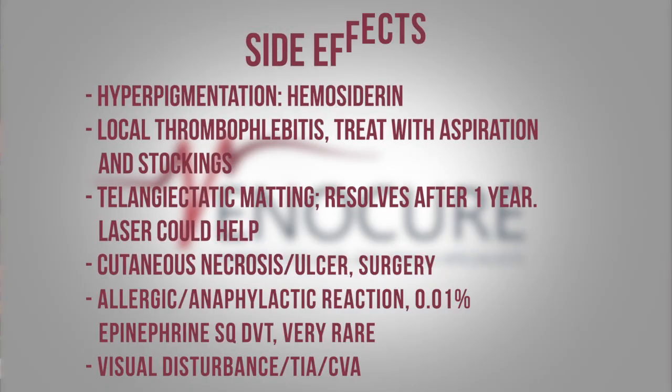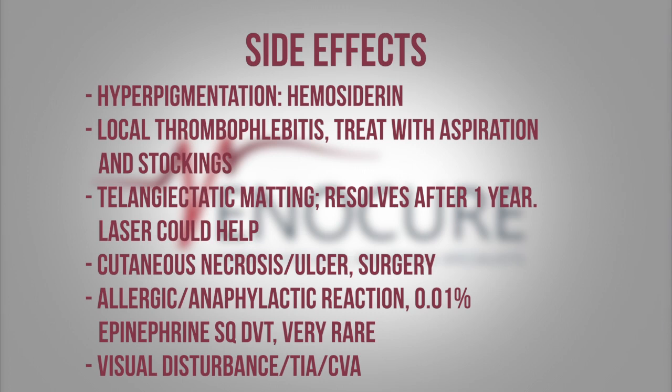Now, side effects of sclerotherapy you should be aware of: hyperpigmentation — brown pigmentation over the vein area — it's cosmetic, not really a medical problem. You can do aspiration of those veins because usually there's clotted blood inside; I put in a needle and express the coagulum — it's liquid — and the vein improves instantly. You can also have phlebitis, because some branches may not be ablated equally and blood stays in them and becomes inflamed. Telangiectatic matting means tiny spider veins form in the area of injection.